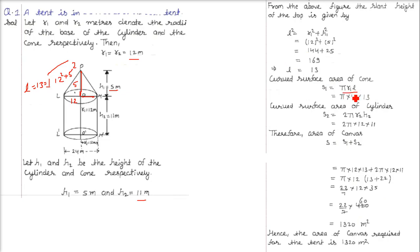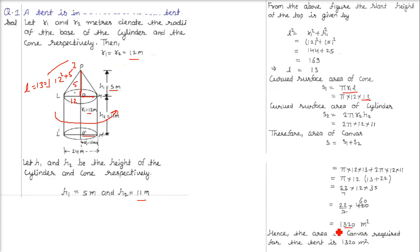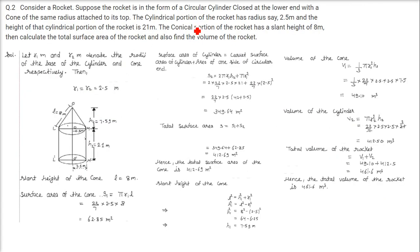The curved surface area for the cone is π × R × L = π × 12 × 13. The curved surface area of the cylinder is 2πRH = 2 × π × 12 × 11. When you combine and add these, you get 1320 square meters, which is the area of canvas required for the tent.